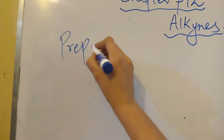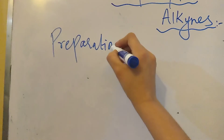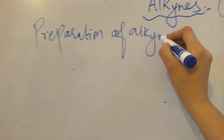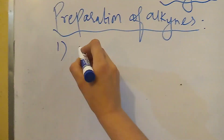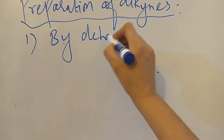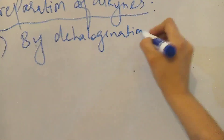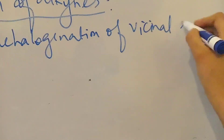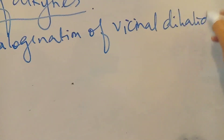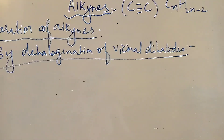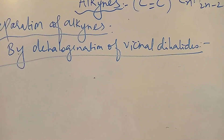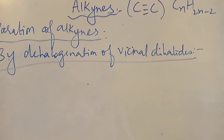These methods are very important. The first method is by dehydrohalogenation of vicinal dihalides. Vicinal dihalides are those alkyl halides which contain two halogen atoms on adjacent carbon atoms.